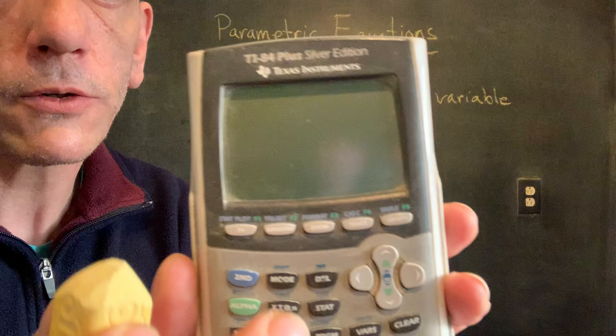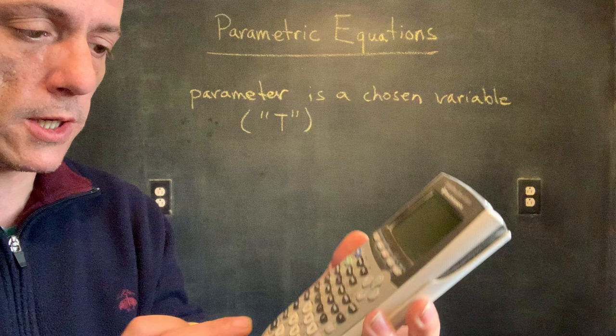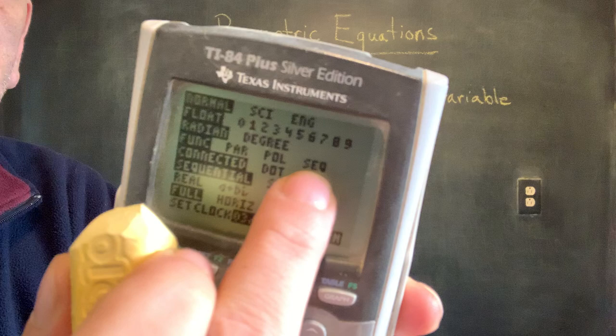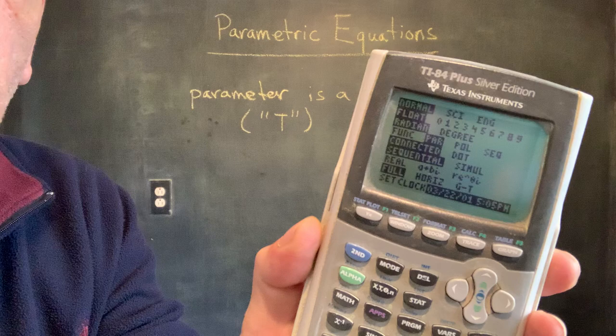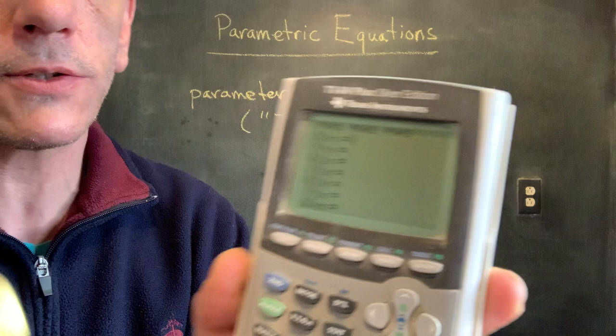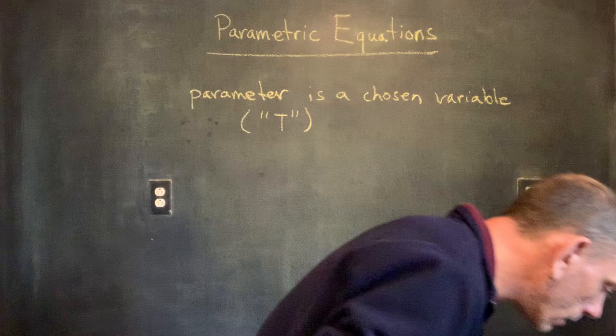On your calculator, you'll notice that your independent variable options are X, T, theta, and N. Those correspond to the different modes. If you go to mode, you'll notice function mode, but there's also parametric, polar, and sequential. We can switch over to parametric — go down, select parametric, and hit enter. Now when I go to Y-equals, it's giving me X and Y as functions of T. If I hit the independent variable key, it's automatically T — the common parameter.